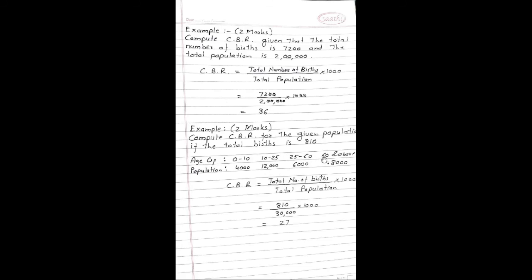Another two-mark example: compute CBR for the given population if the total births are 810. Age group wise population: 0-10 is 4,000; 10-25 is 12,000; 25-60 is 6,000; 60 and above is 8,000. Total population is 30,000. CBR equals 810 divided by 30,000 into 1000 = 27.